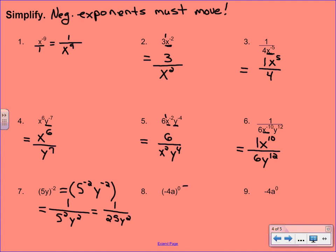Number 8: we have this whole base here raised to the 0 power. You don't have to do anything fancy — anything to the 0 power is 1. If you wanted to distribute that 0, you could, but it's actually easier just to take the whole thing as 1. Now, number 9 almost looks identical to number 8, but the difference is we have no parentheses. So the 0 power only goes to the a. What you have to do with that negative 4 is put the little 1 there for the power on the negative 4. So what we really have is negative 4 times 1. 8 to the 0 is 1, so our answer here is negative 4. Understand the difference between 8 and 9 is just the fact that 8 had parentheses, 9 did not.